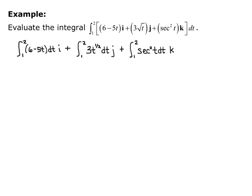Plus the integral from 1 to 2 of secant squared of t dt times k. The i component becomes 6t minus 5/2 t squared, evaluated from 1 to 2.